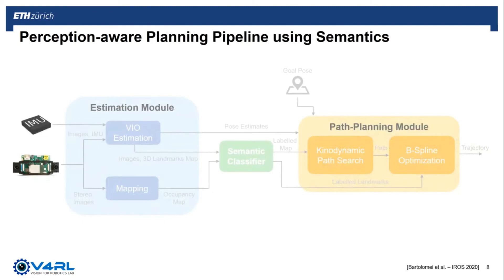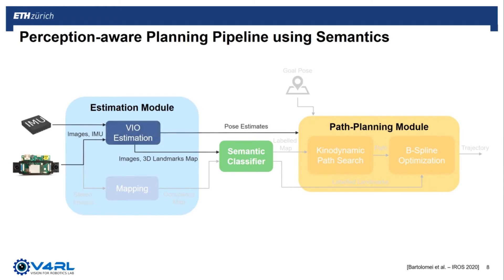In the following, we illustrate the path planning pipeline in detail. It is composed of three main parts: an estimation module, a semantic classifier, and a path planning module. We assume the UAV is equipped with an IMU and a stereo camera, which is used for both mapping and egomotion estimation. The IMU measurements, together with the monocular images, are fed to the VIO estimator, which provides robot poses and a sparse map of 3D landmarks. The stereo images are instead used by the mapping module to generate a dense 3D occupancy map of the environment.